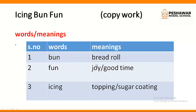Bun means bread roll. Fun means joy, good time — fun is a very good time when we are enjoying something. Icing means topping or sugar coating. It might be the topping of cream or the topping of sugar.